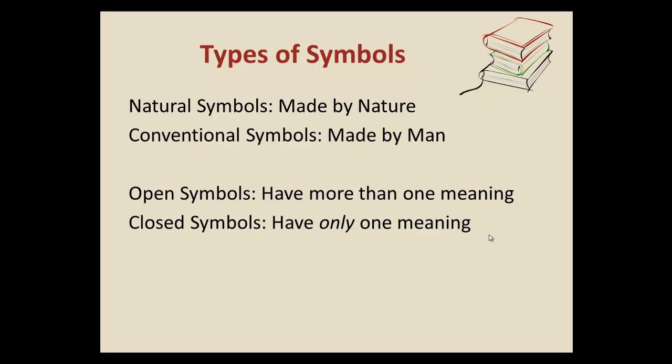Now we have some more types of symbols. You heard in the definition about a traditional symbol as well as an invented symbol. There are also types called natural and conventional symbols — natural symbols are made by nature, and conventional symbols are made by man. We also have open symbols and closed symbols. An open symbol would have more than one meaning, whereas a closed symbol would have only one meaning. Most symbols represent more than one meaning.